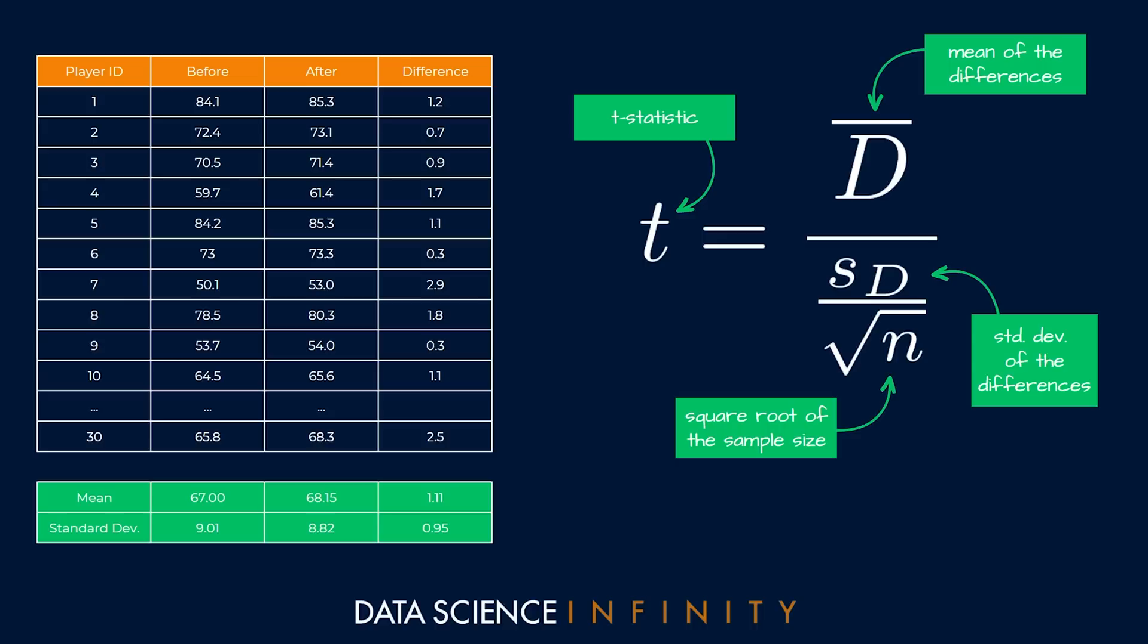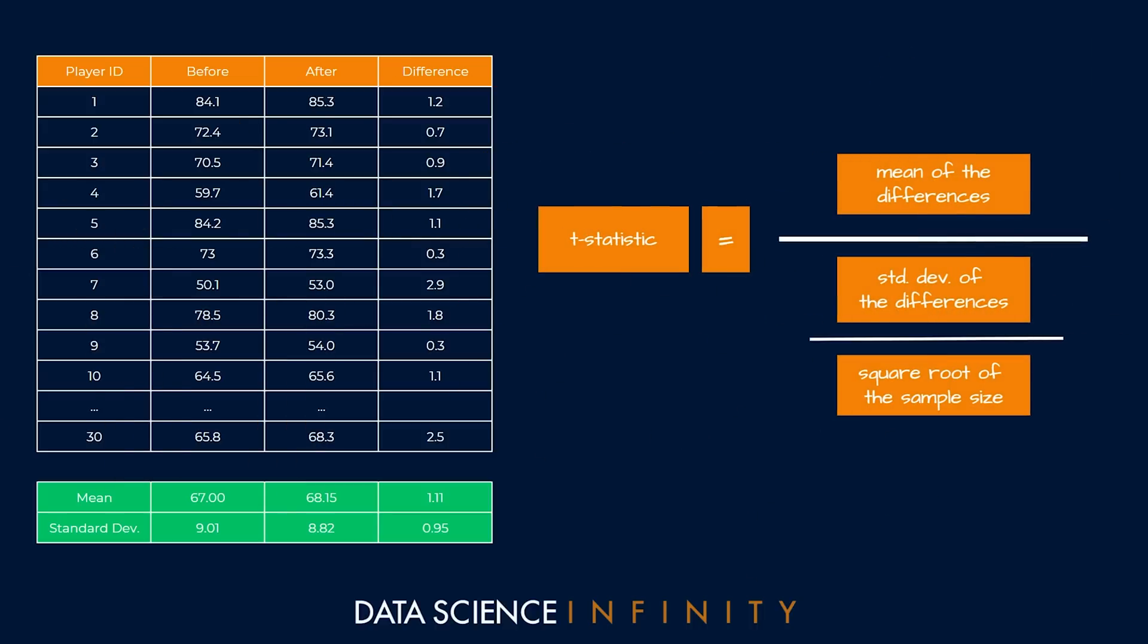Let's run the numbers and calculate this together. Let's simplify the formula and feed in the numbers that we require. At the top, for the mean of the differences, we have that in our table of data at the bottom, a value of 1.11. Below that we need the standard deviation of the differences, which we have at the bottom of our data, equal to 0.95. Finally we need the square root of our sample size n which is 30, and the square root of 30 is 5.48.